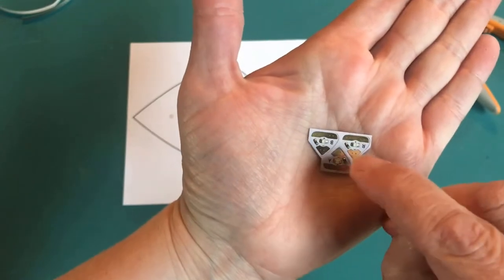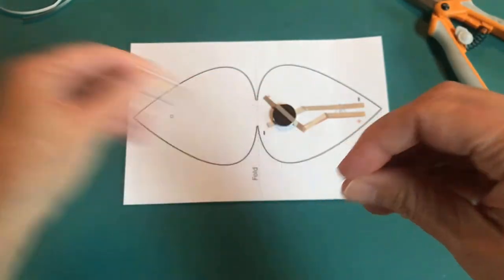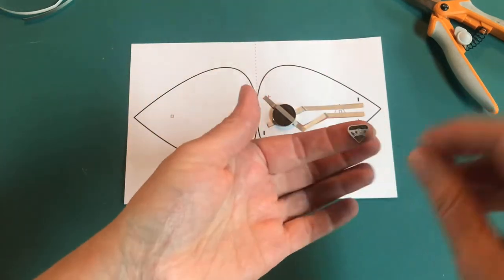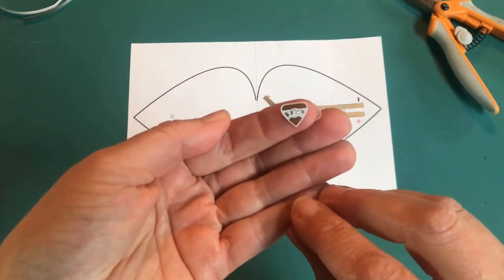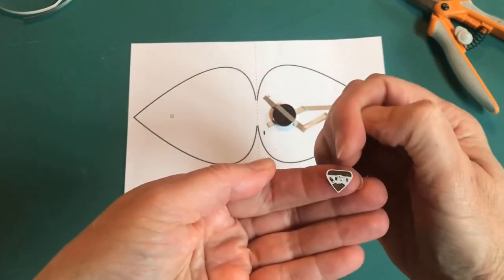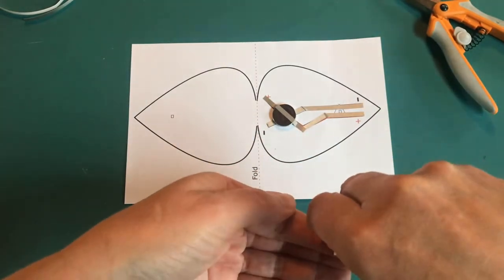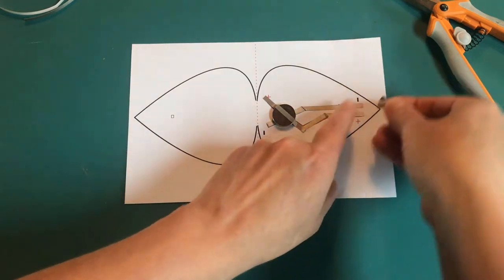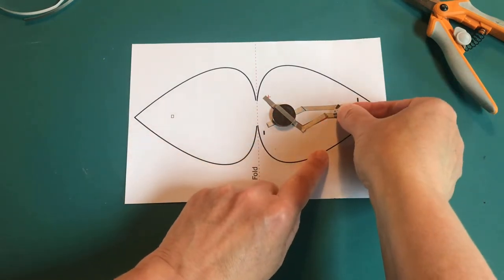The circuit sticker LEDs have a pointy side and a thicker, more flat side. We want to have the pointy side facing up. The pointy side is going to touch the negative side of the circuit. And the flat, big side is going to touch the positive side of the circuit.